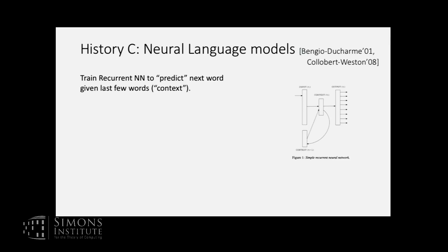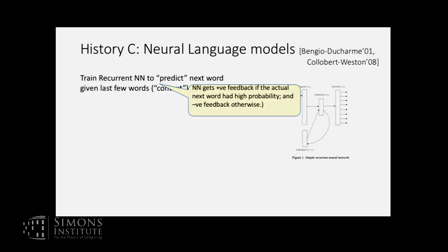History C: neural language models. This started with the paper by Bengio, Ducharme, Collobert, and Weston about 15 years ago. The hypothesis, related to the distributional hypothesis, is that a neural net has understood language if it can predict the next word given the last few words. The neural net, given the last ten words, generates a distribution on words, and the actual next word should have high probability. It gets positive feedback if correct, negative otherwise.